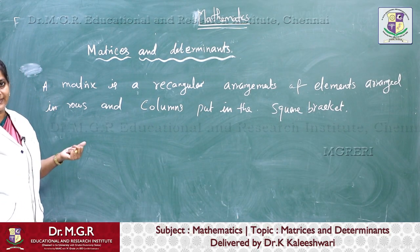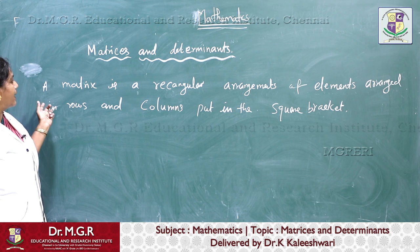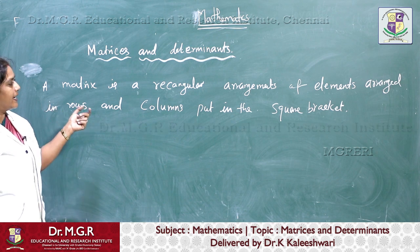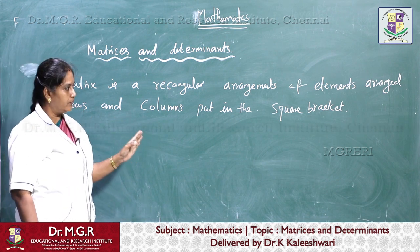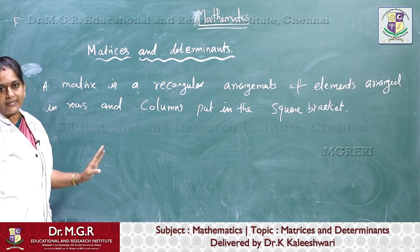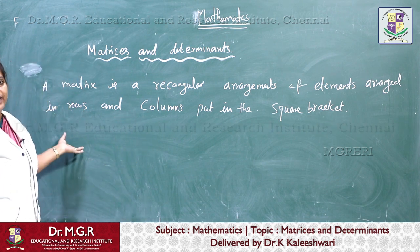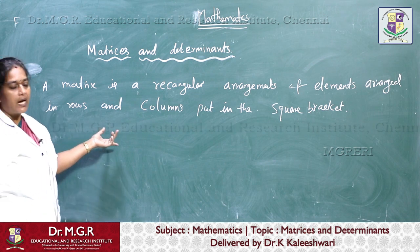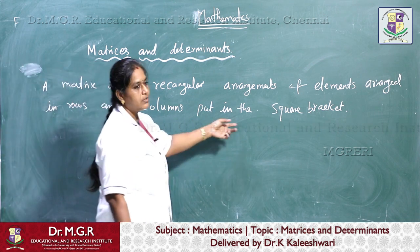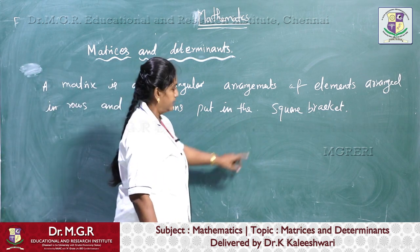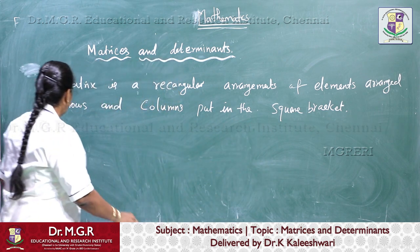A matrix is a rectangular arrangement of elements arranged in rows and columns, put in square brackets. For example,